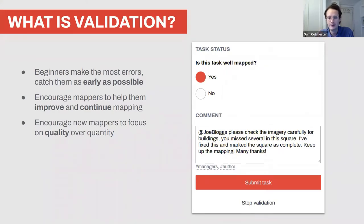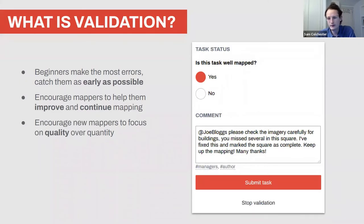Validation helps mappers improve their mapping — we're all beginners at some point. When I first started mapping I made lots of errors, but I received messages from validators saying I was doing well and could improve by doing X. That's a really important role. As a validator you're also responsible for catching mappers as early as possible in their process, stopping them from repeating errors again and again.